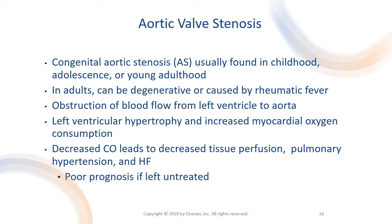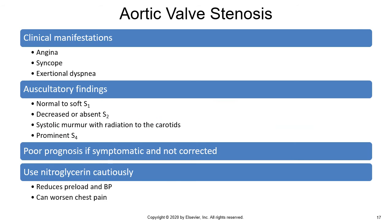Clinical manifestations of aortic stenosis develop when the valve orifice becomes about a third of its normal size. They include the classic triad of angina, syncope, and exertional dyspnea, reflecting left ventricular failure. Auscultation often reveals a normal or soft S1, a decreased or absent S2, and a crescendo-decrescendo systolic murmur with radiation to the carotids.